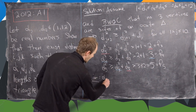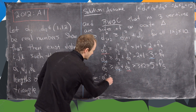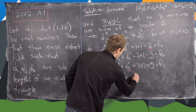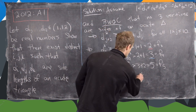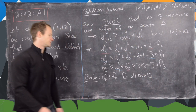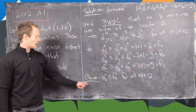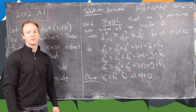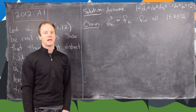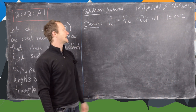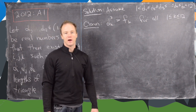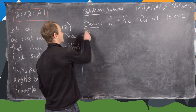We can now make the following claim: dk squared is strictly greater than fk for all k between 1 and 12, where fk denotes the k-th Fibonacci number. We'll move this claim to the top of the board and prove it by induction.